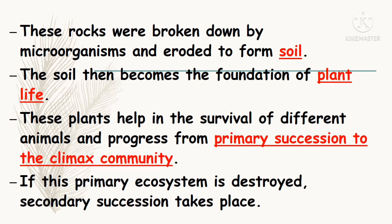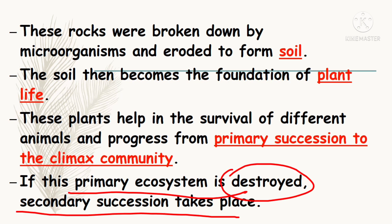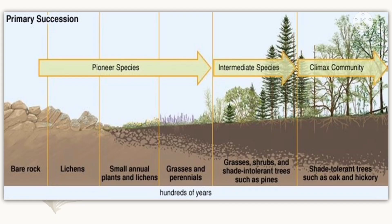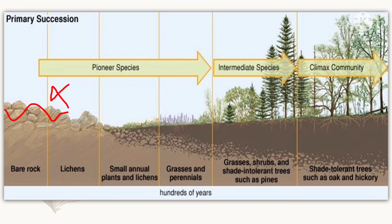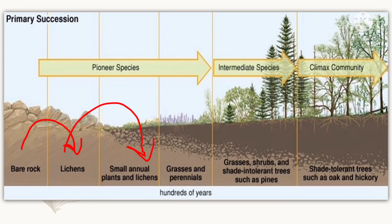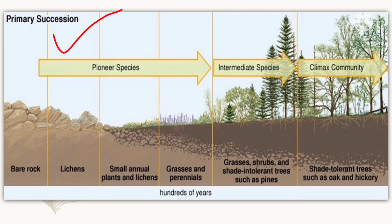If the primary ecosystem is destroyed entirely, then secondary succession begins. In the diagram, you can see how primary succession forms: first, a bare rock is a lifeless area where microorganisms or lichens occur and break down the bare rocks into small pieces. From there, soil formation starts, where grasses, perennials, plants, and lichens occur. This process is called primary succession.